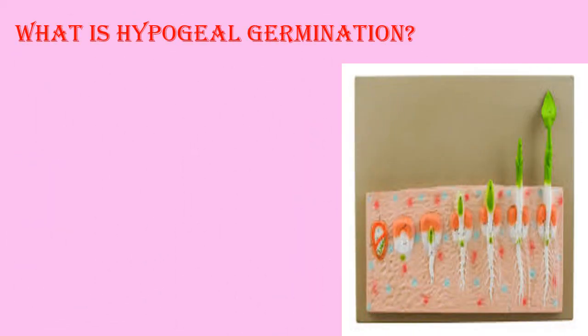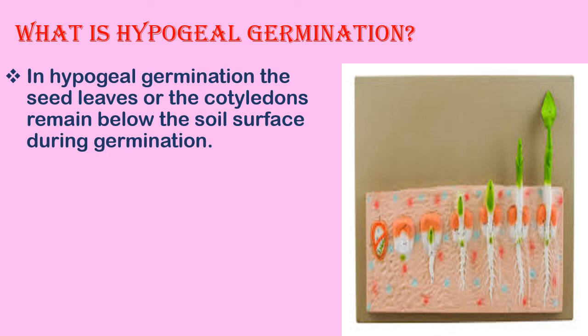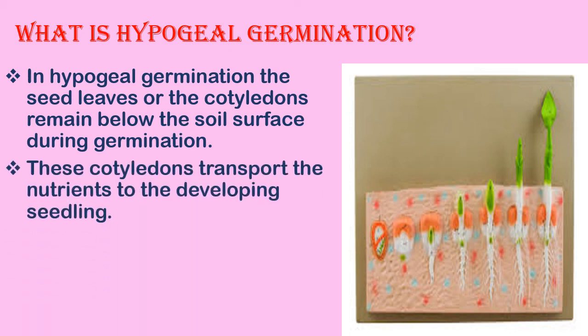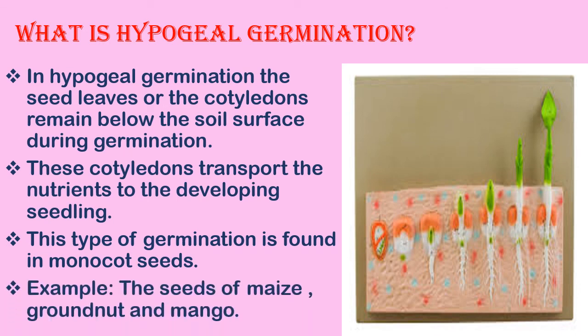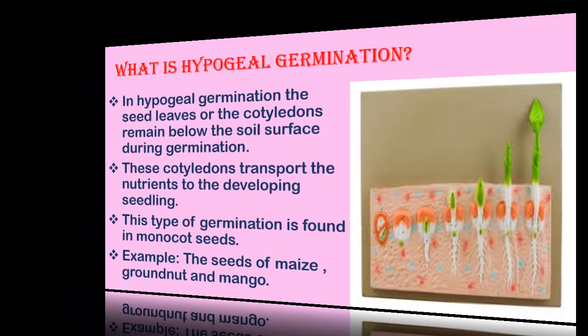In hypogeal germination, the seed leaves or cotyledons remain below the soil surface during germination. These cotyledons transport the nutrients to the developing seedling. This type of germination is found in monocot seeds. Examples: seeds of maize, groundnut and mango. I hope all the topics explained in this video were worth watching and interesting. Thank you.